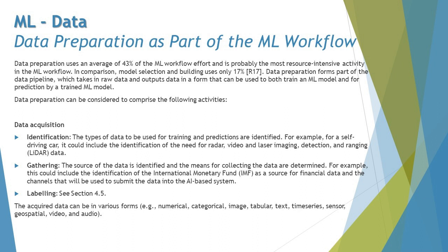Data preparation comprises the following major activities: data acquisition, data pre-processing, and feature engineering. Today we'll be talking about data acquisition and data pre-processing; the rest we'll cover in the next segment. Data acquisition considers three major phases: first, identification; second, gathering; and third, labeling. Identification is the foremost activity — you need to identify the right set of data, understanding what exactly you need before you begin preparation.